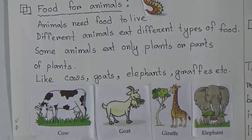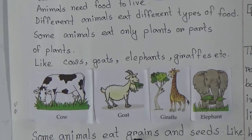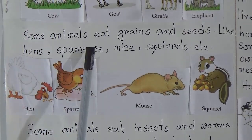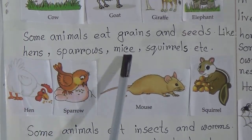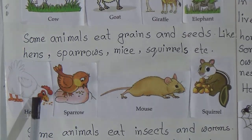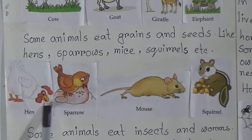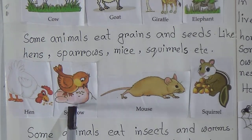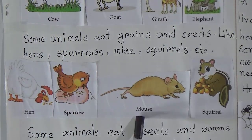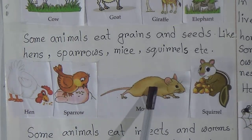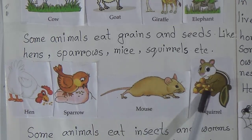Some animals eat grains and seeds, like hens, sparrows, mice, and squirrels. See, this is the hen — the hen is eating grains and seeds, and the sparrow also does the same thing. The mouse can eat everything but most of the time eats grains and seeds. The squirrel also eats grains and seeds.